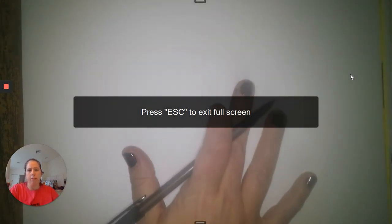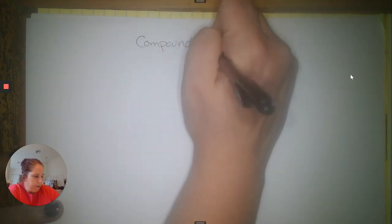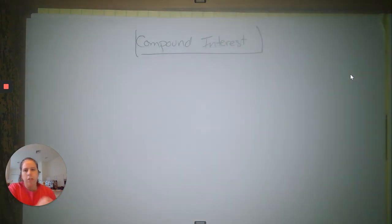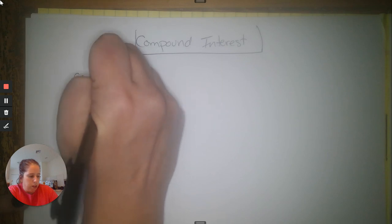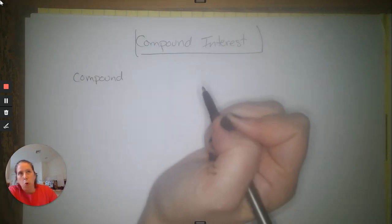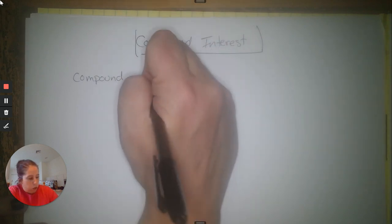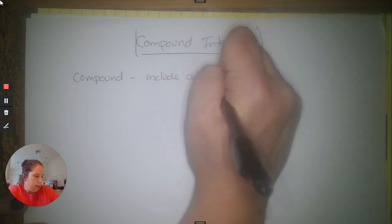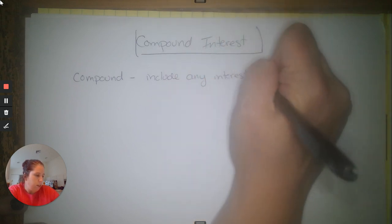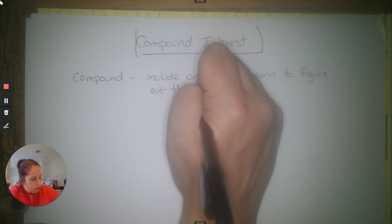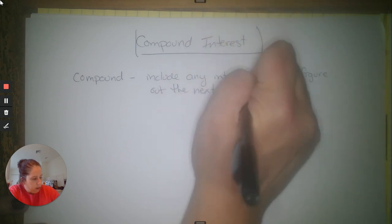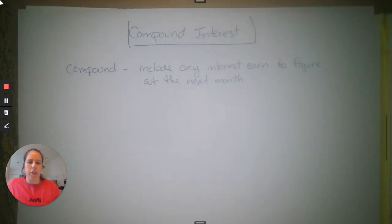Today's lesson is going to be on compound interest, which is really just an exponential growth problem but it's money. Compounding means that you earn interest and it is included for the next month — you include any interest earned to figure out the next month. That's if it's compounded monthly; there are a couple different ways to compound interest.